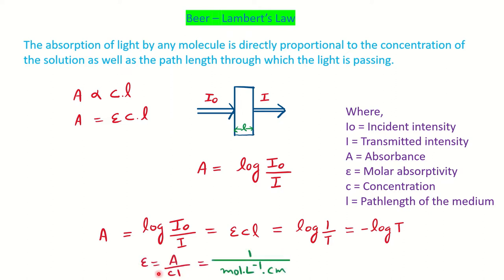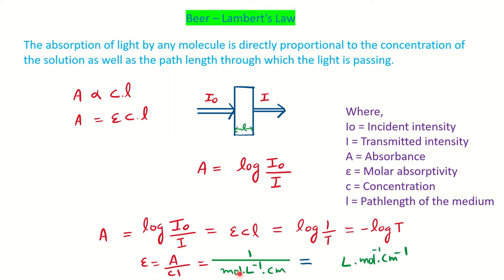Another important thing is calculating the unit of molar absorptivity. We can derive it by rearranging the formula: ε = A / (CL). Absorbance has no unit (it is dimensionless), concentration is in moles per liter, and thickness is in centimeters. So the unit of molar absorptivity is liter per mole per centimeter (L mol⁻¹ cm⁻¹).